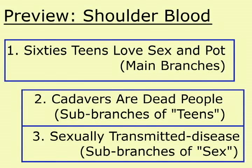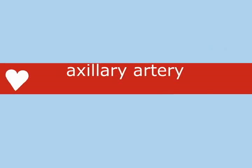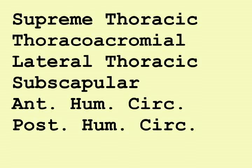Let's first talk about the main branches directly off the axillary artery. This is the artery that comes from the heart to the hand. The axillary artery gives off six branches, remembered with the mnemonic: 60s Teens Love Sex and Pot. The initial letter of each word reminds you of the first letter of each anatomical term in the order it comes off the axillary artery.